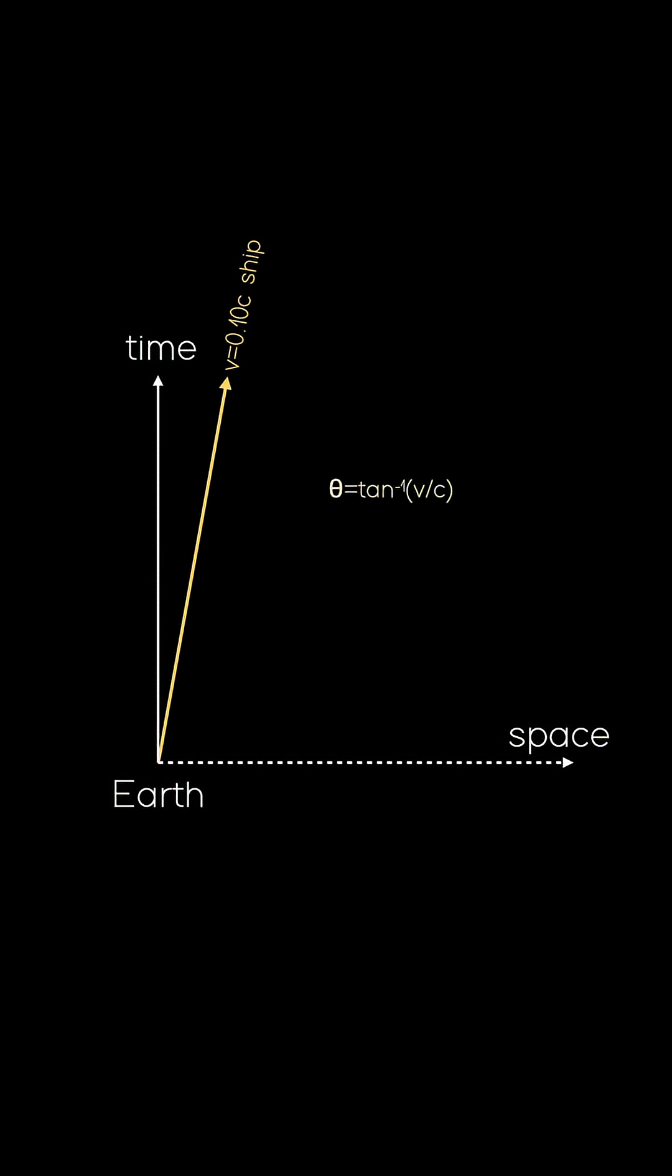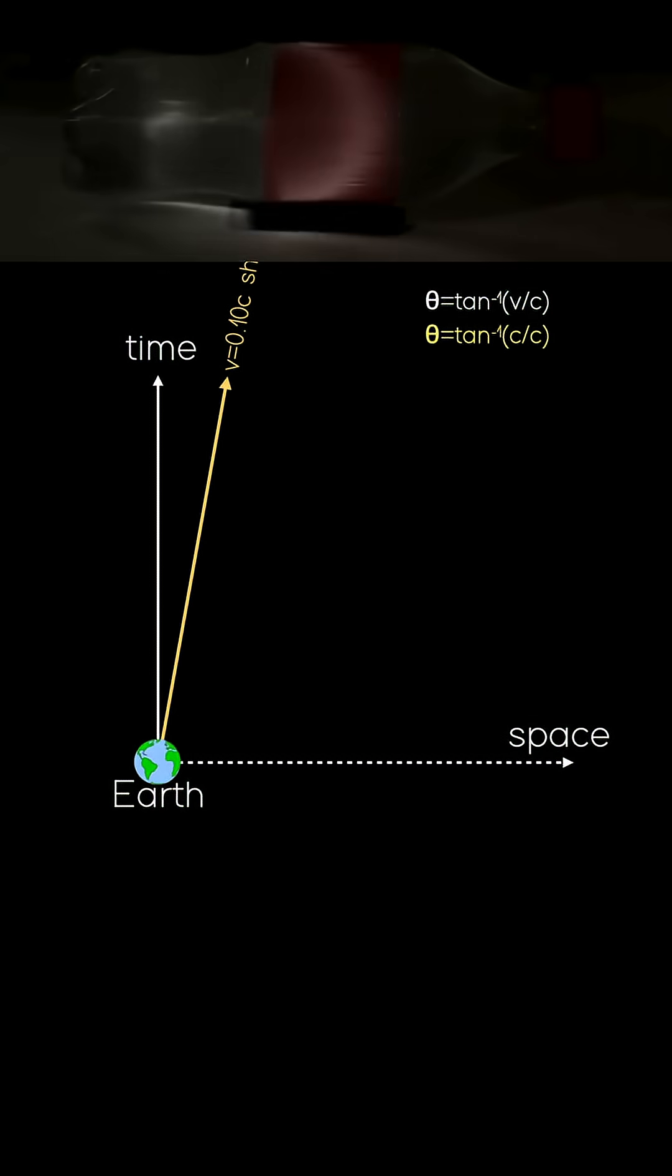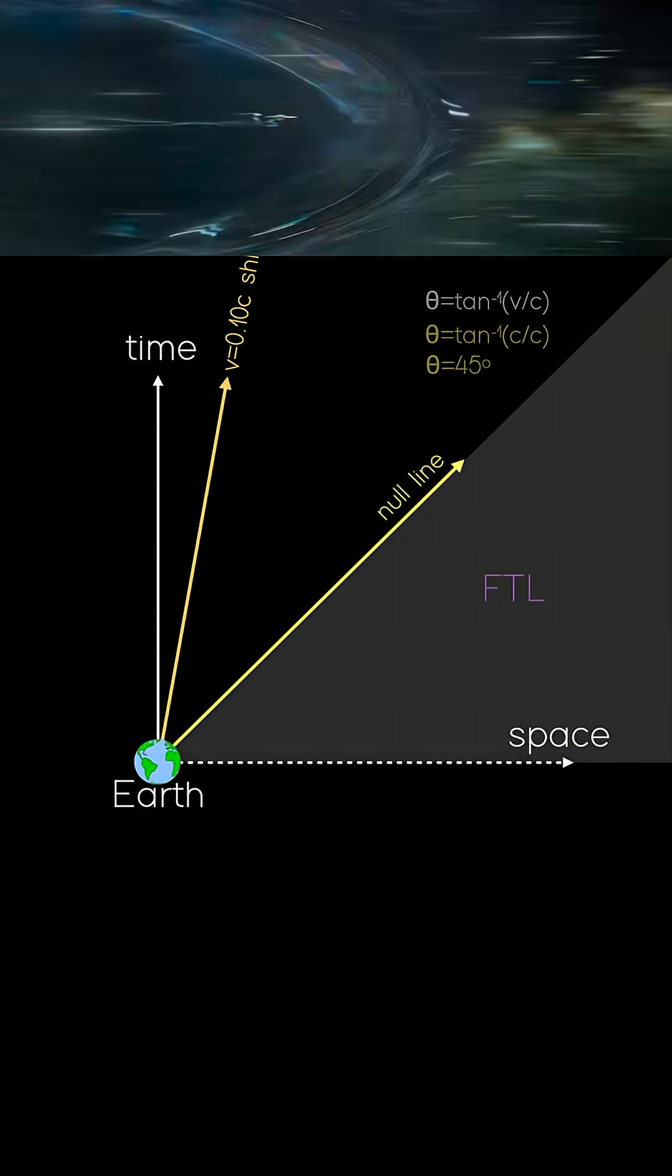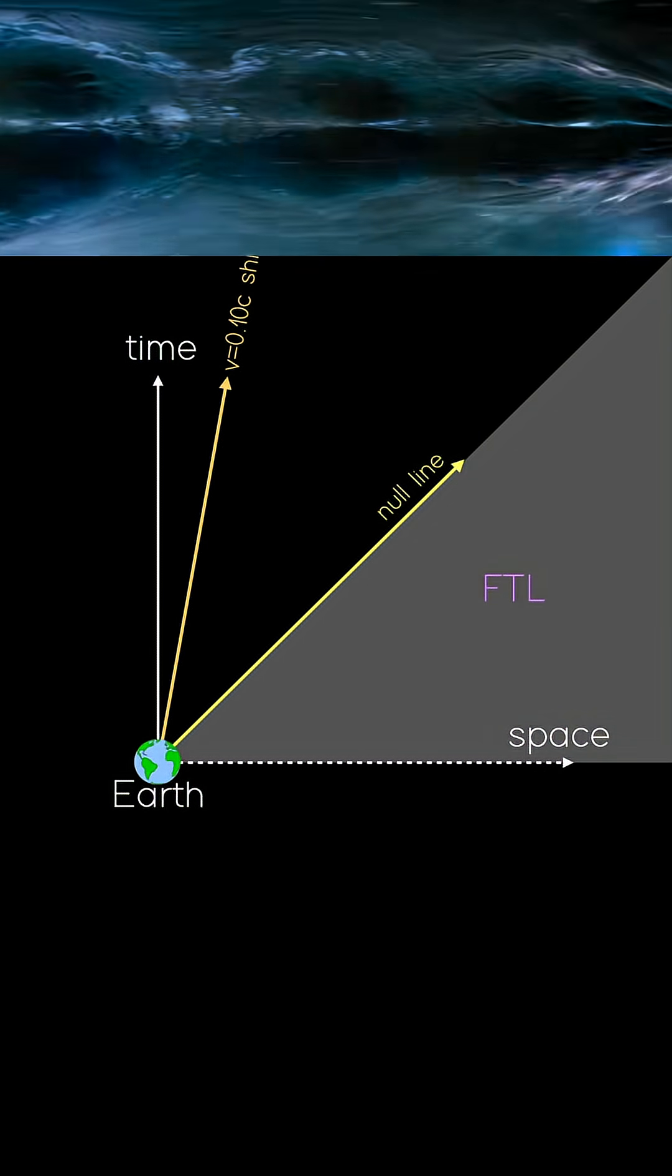So that rule implies an interesting limit. What happens if v equals c? In other words, something is moving at the speed of light. The angle now equals 45 degrees, and we call that a null line. This is what light does. Anything steeper than this line will be travelling faster than the speed of light, or FTL.